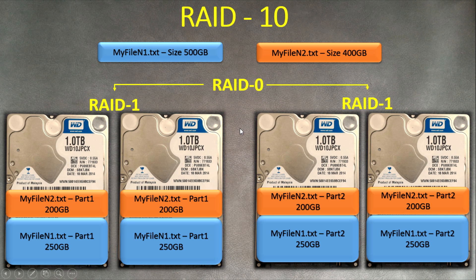RAID 10 is expensive because when you have four disks of one terabyte each, you only have two terabytes available — the other two terabytes are used for mirroring and redundancy. So you're getting only 50% of the total disk space, which means you need to buy more hard drives. However, the performance is superb — it reads and writes to all four disks simultaneously.